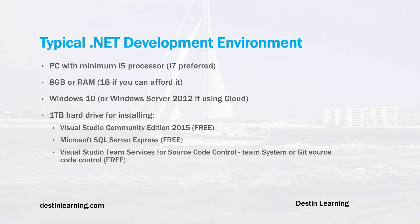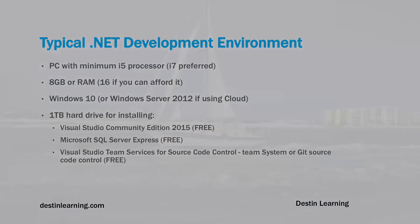For a typical .NET environment, you'll need a PC with a minimum of an i5 processor, although an i7 or equivalent is preferred. You'll also need a minimum of eight gigabytes of RAM, although 16 would be better if you can afford it. Windows 10 is the best environment for current .NET development, though you could use Windows Server 2012 for cloud-based development. You should also get a one terabyte hard drive for installing software such as Visual Studio Community Edition 2015, Microsoft SQL Server Express, and Visual Studio Team Services for source control.